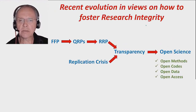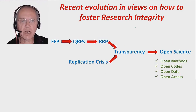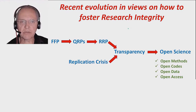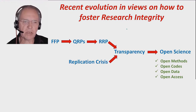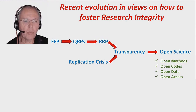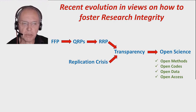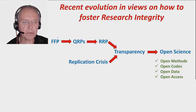When I was reflecting on this talk, I realized that in the last decade I've been involved in research integrity, I've seen a kind of evolution. At least I believe I've seen a kind of evolution. When we started off, it was still very much about FFP only, the capital sins: fabrication, falsification, and plagiarism.